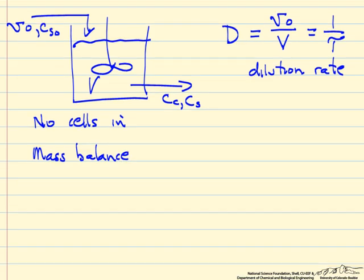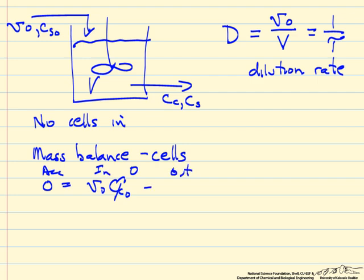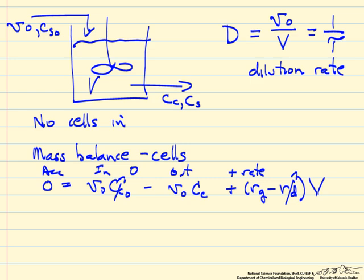We're going to look at mass balances for the substrate and for the cell concentration. First, let's look at the mass balance for the cells. It's a steady-state reactor, so the accumulation term is zero. We have the concentration of cells coming in — which is zero since we feed no cells — minus the cells leaving, plus the rate of generation of cells minus the rate that cells die, all times the reactor volume. We're going to look at the simplified case where the death rate Rd equals zero.